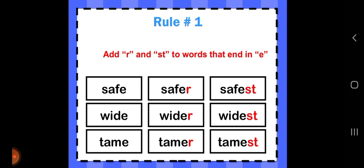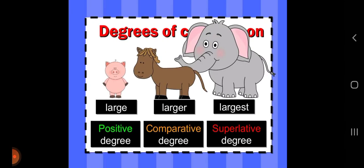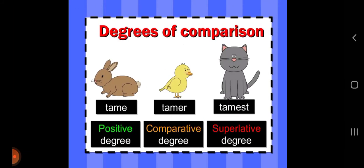Here are the three degrees. Positive, comparative, superlative: safe, safer, safest. Wide, wider, widest. Tame, tamer, tamest. For example, the word 'large': positive degree is large, comparative degree is larger, superlative degree is largest. 'Tame' stays tame in positive, tamer in comparative, and tamest in superlative.